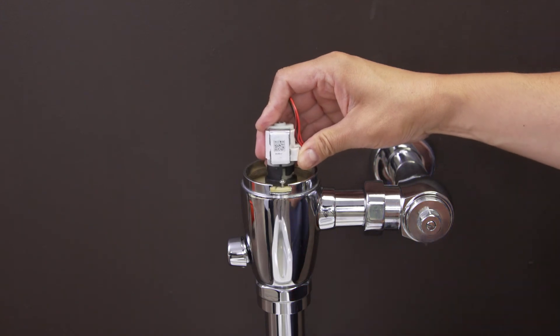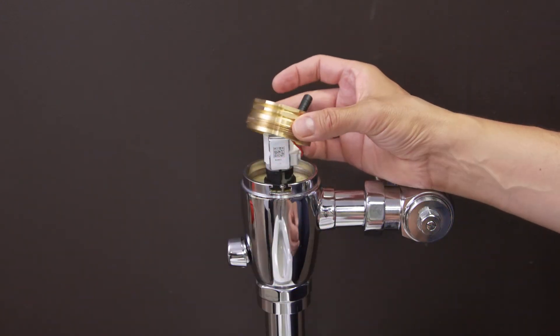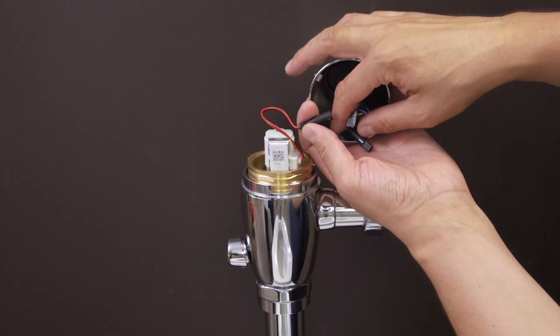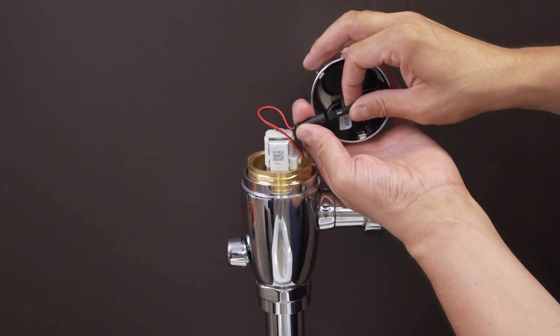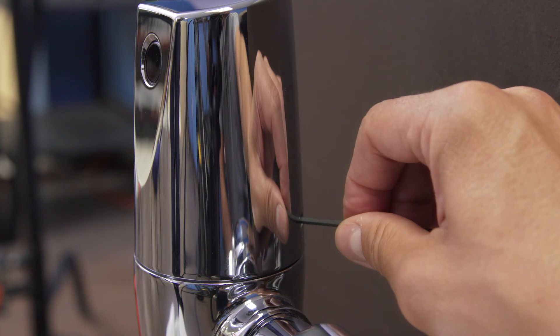Push the sub assembly down into the flushometer. Feed the wire through the bonnet nut and tighten the nut to secure the assembly. Now attach the sensor wire. Replace the cover and tighten the set screw.